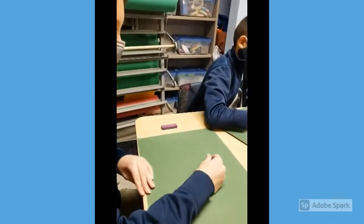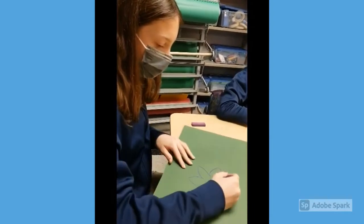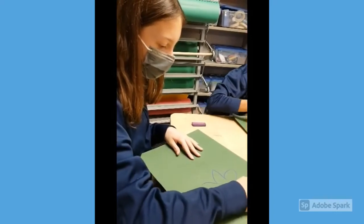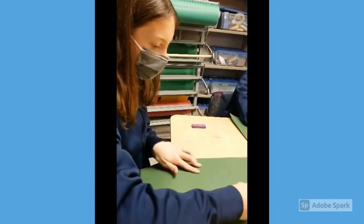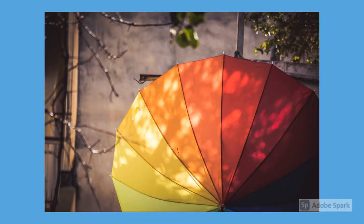Could you show me? And you're just going to make a flower shape. So analogous colors are groups of three colors that are next to each other on the color wheel. The term analogous refers to having analogy or corresponding to something in particular. An analogous color scheme creates a rich, monochromatic look.